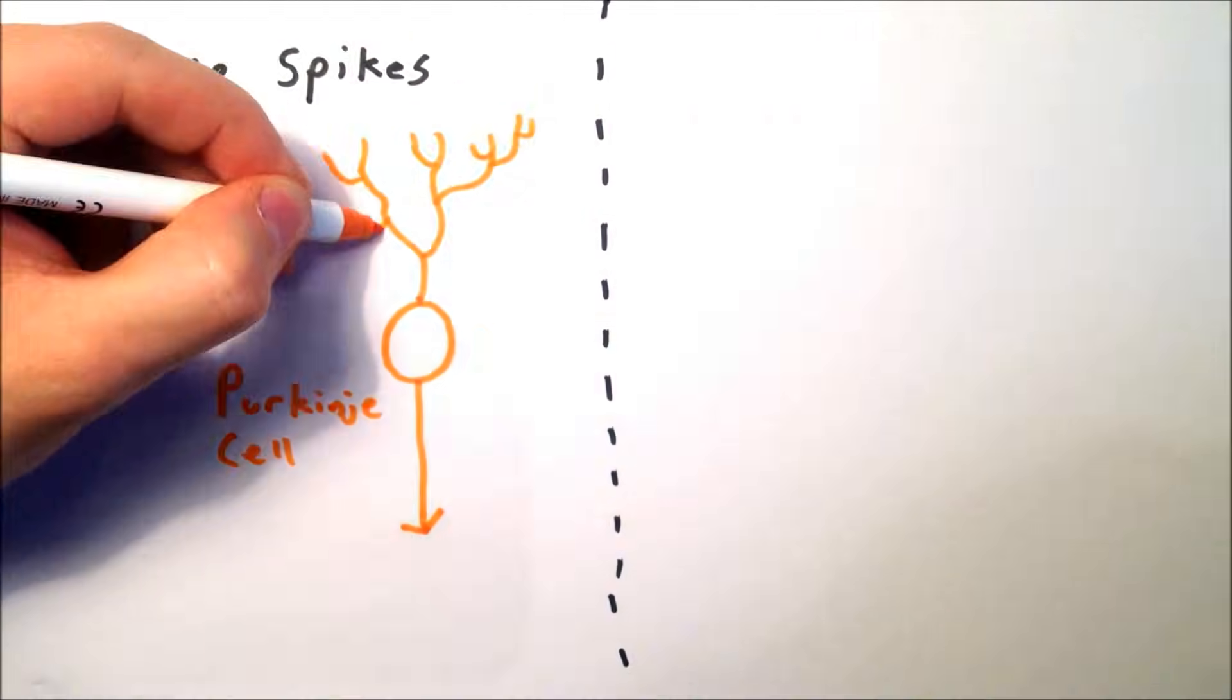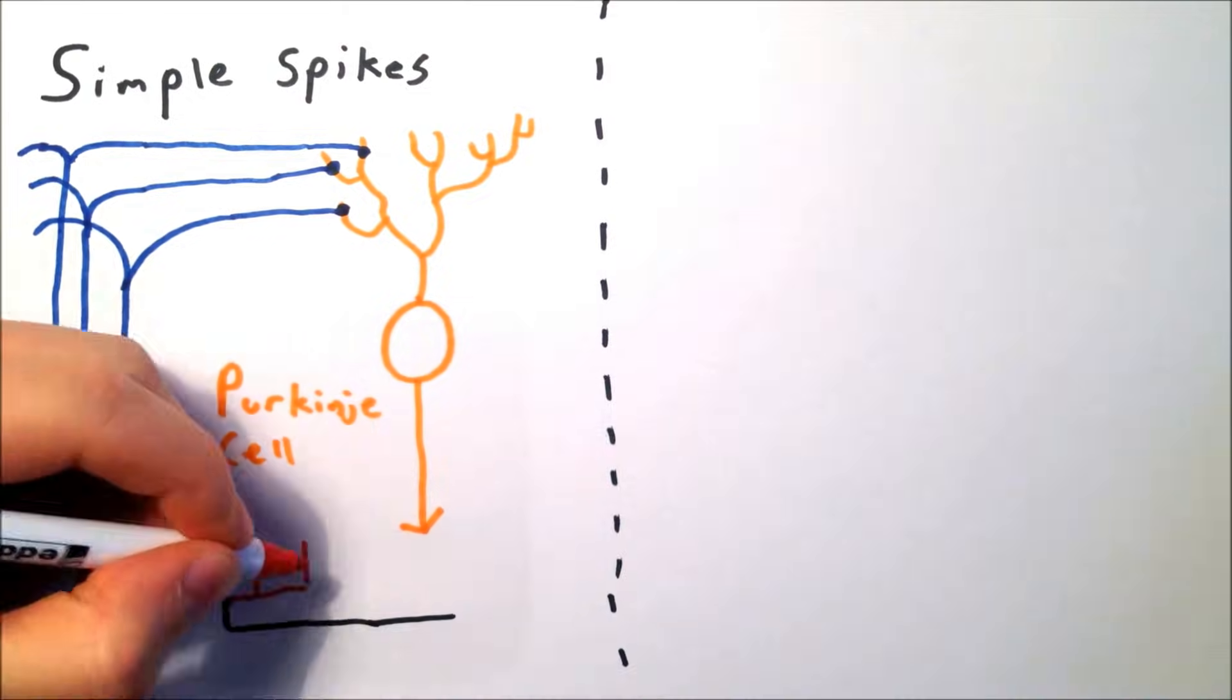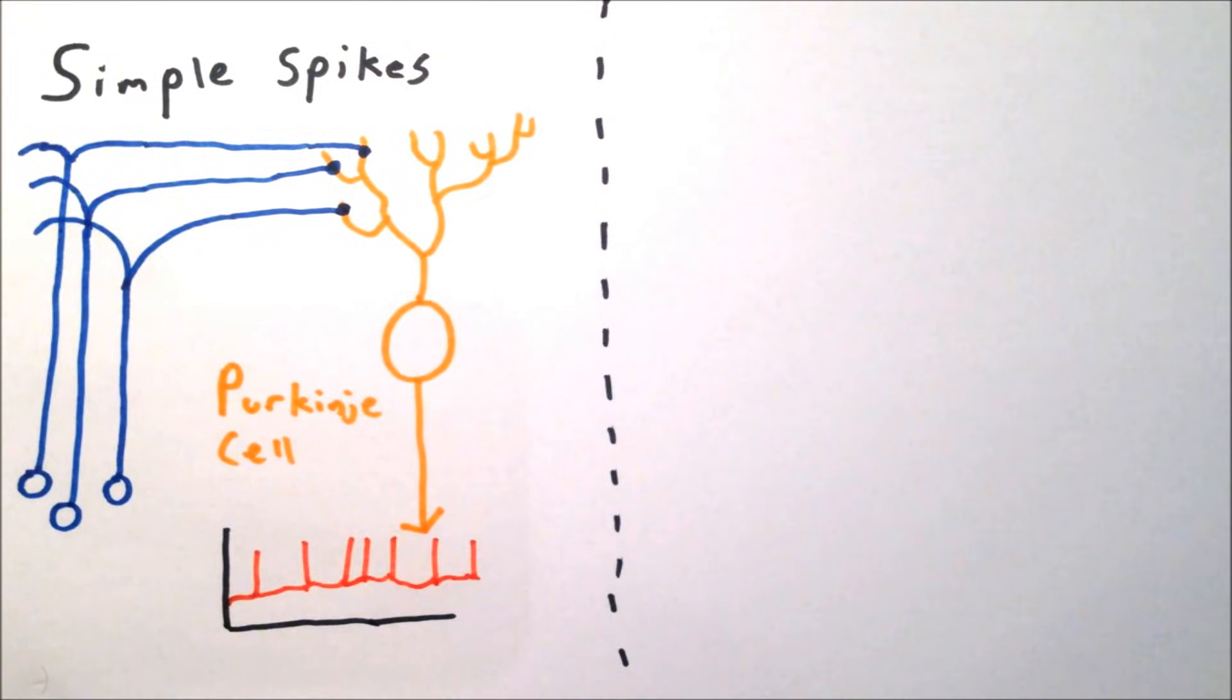Purkinje cells typically have two different modes of firing. Simple spikes are typical action potentials, which occur when the Purkinje cells are stimulated by the parallel fibers of granule cells.